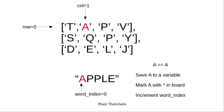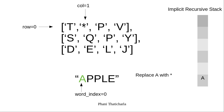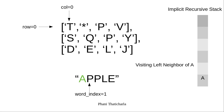Let's do these three things. First I will save letter A to a temporary variable — I'm representing it this way just for our understanding, you don't have to create a stack. Then we will mark this letter A with a star. And now we will increment this word index by 1. After this we explore the left neighbor of node A. We are at row 0 and column 0. Is letter T equal to letter P? No. So we backtrack — we go back up in the recursion.